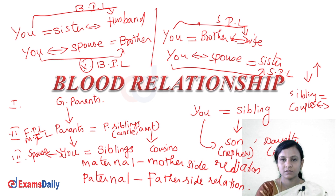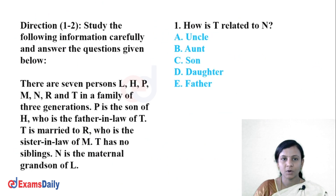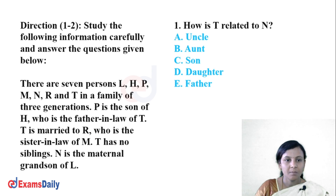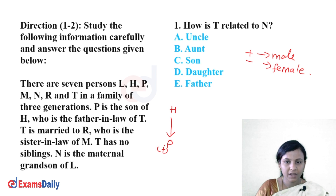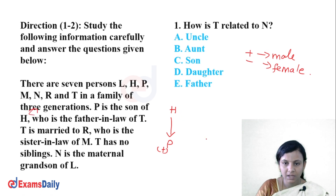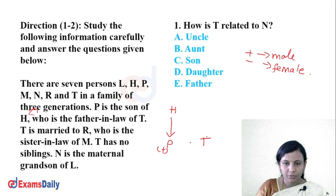Now let's move on to the problem. Study the following information and answer the questions below. There are seven persons in a family across three generations. P is the son of H, so P and H are in a parent-child relation. H is the father-in-law of T, which tells us that T is in P's generation.